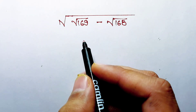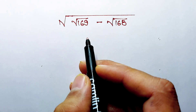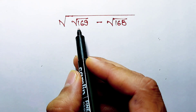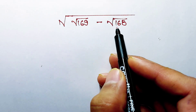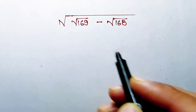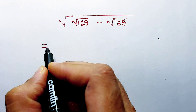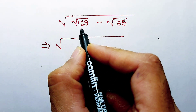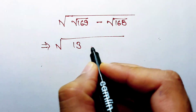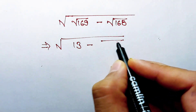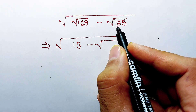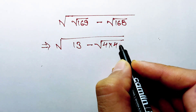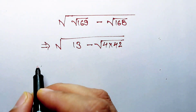Today we have to simplify this question: the square root of square root of 169 minus square root of 168. First of all, we know that the square root of 169 is 13, and we can write 168 as 4 multiplied by 42.